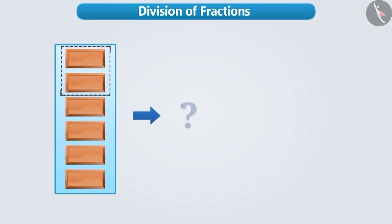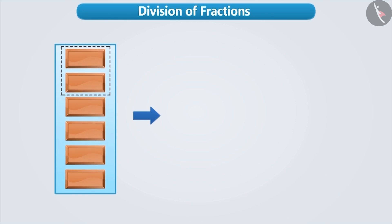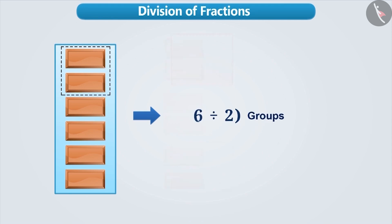If you want to make groups of two chocolates, then you can make six divided by two. So three groups can be made.